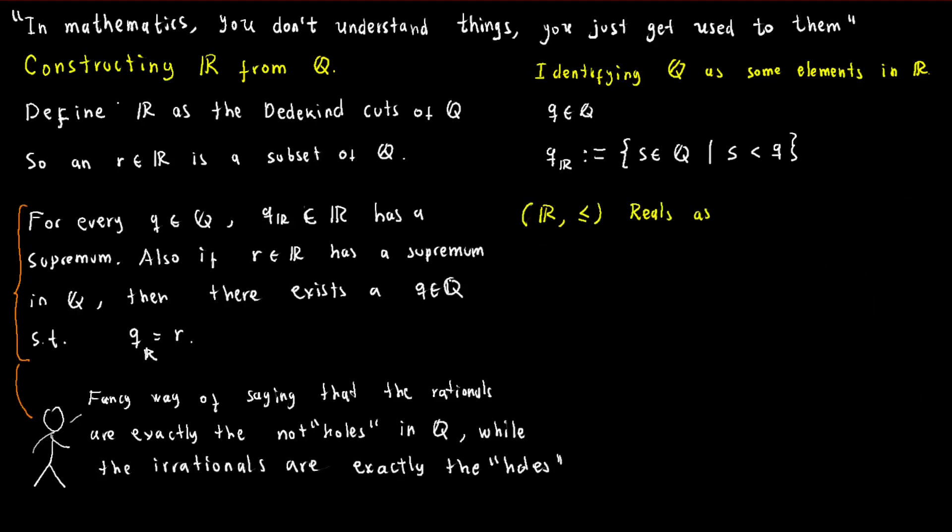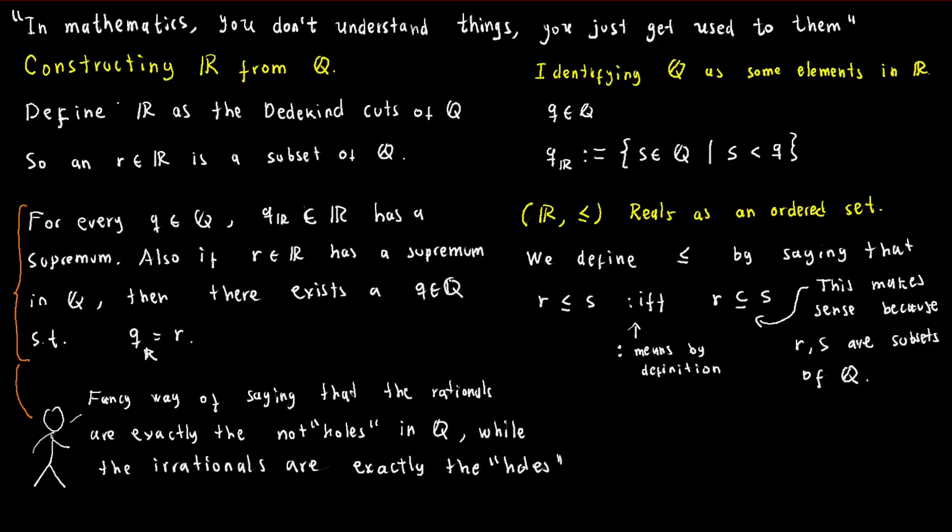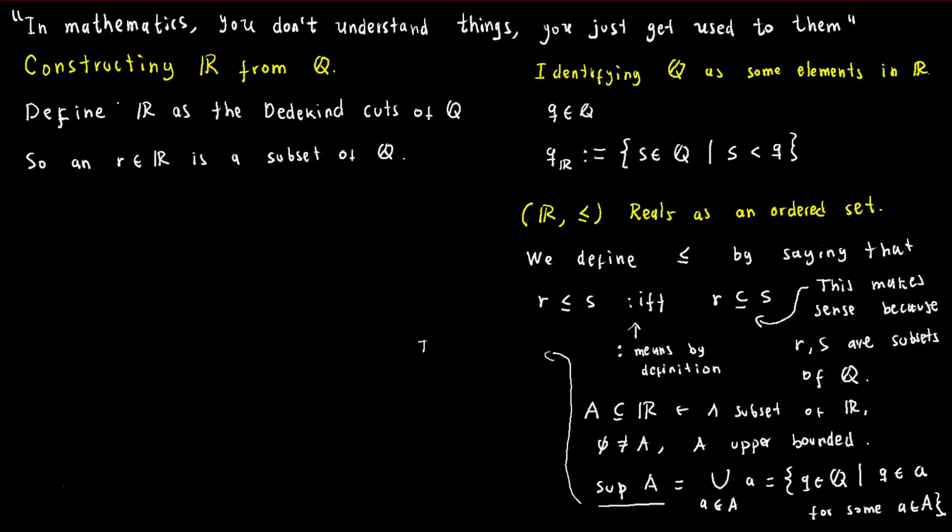To establish a total order in the real numbers, we define that a real number x is less than or equal to another real number y if and only if x is a subset of y. With this definition, we now have the real numbers as an ordered field that extends the rational numbers. Importantly, we can also verify that every bounded set of real numbers has a supremum under this order. In fact, the supremum of a set of real numbers is simply the union of those numbers.